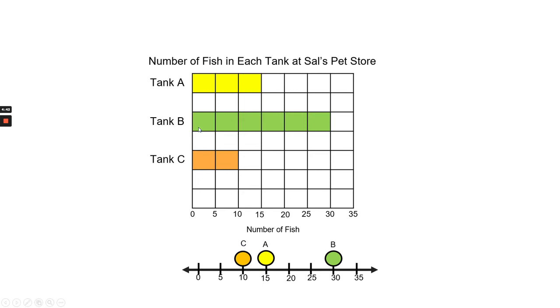Tank B has 30 fish. So, we're going to plot a circle in green and label it B right above the 30. And tank A has 15 fish. So, we're plotting that above the number 15.